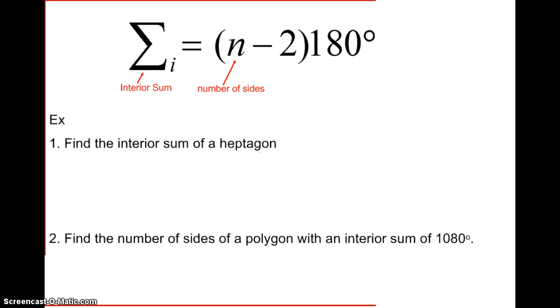So look at two examples. Let's find the interior sum of a heptagon. So that means we're going to identify our variables. So n, the number of sides, is 7, and we need to find the interior sum. So we have 7 minus 2 gives us 5 triangles, and within 5 triangles there are 900 degrees.